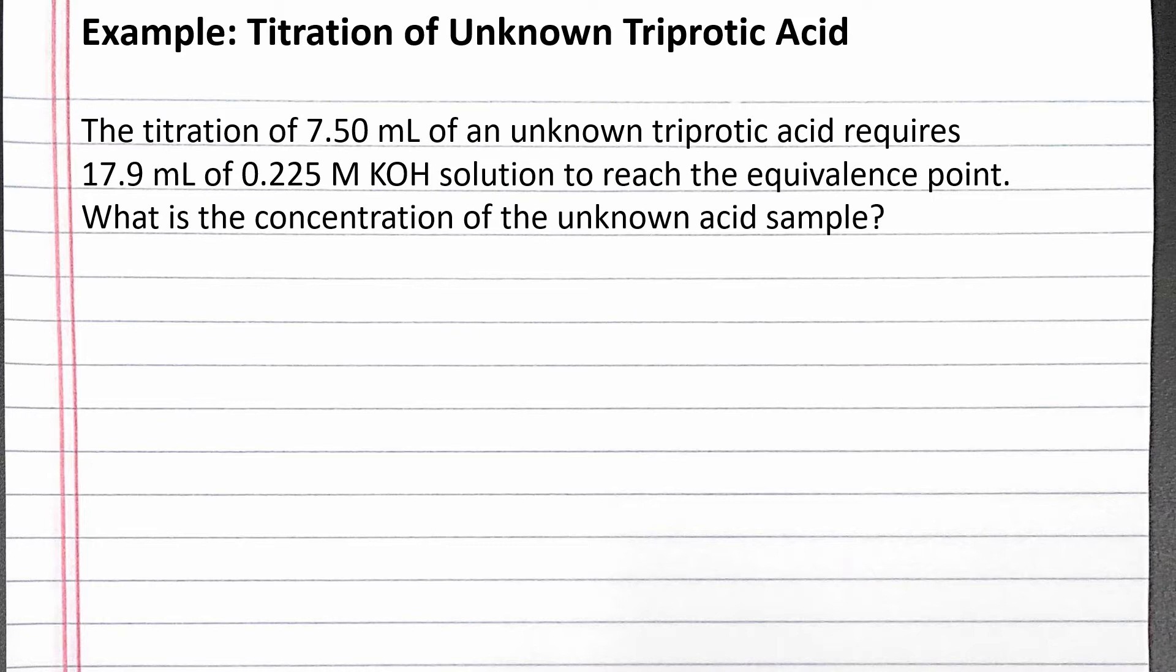Our problem reads: the titration of 7.50 milliliters of an unknown triprotic acid requires 17.9 milliliters of 0.225 molar potassium hydroxide solution to reach the equivalence point. What is the concentration of the unknown acid sample?